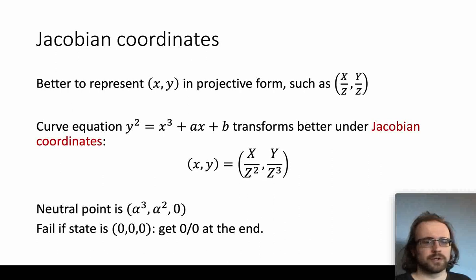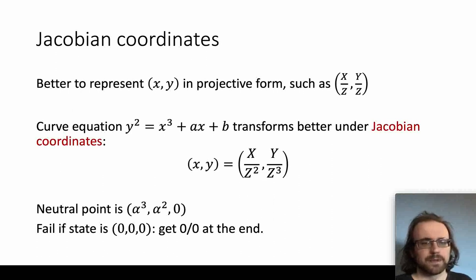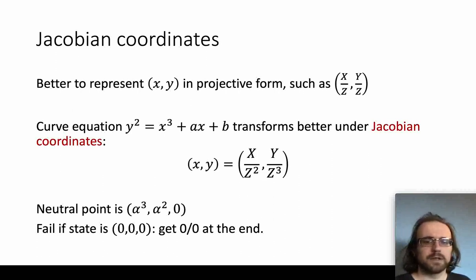For this work we'll be using Jacobian coordinates. It's well known that it's best to represent the x and y coordinates of the elliptic curve in a projective form such as x over z and y over z, so as to defer the costly division to the end of the algorithm. In some cases it's better to use x over z squared and y over z cubed, because this homogenizes the leading term of the curve equation with a z-to-the-sixth term. Z equals zero is allowed; there is a point at infinity — the neutral or identity point — represented with non-zero x and y but z equals zero.